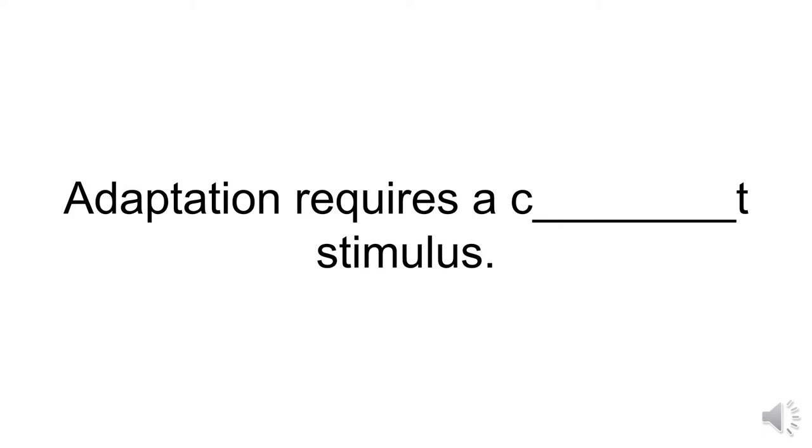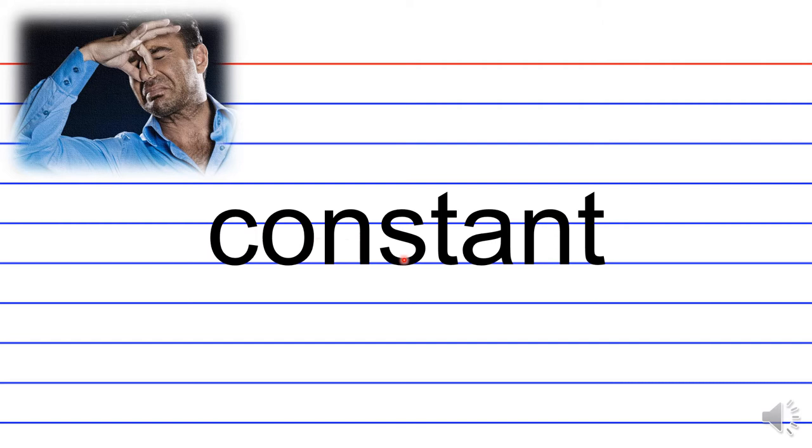Adaptation requires a c-blank t stimulus. So, in order to adapt to a stimulus, what is required? Again, that stimulus has to be constant. Like, you know when someone releases a really potent fart? And after like a few seconds, you get accustomed to the smell, almost as if it's not there. That's because there's a constant whiff of gas molecules interacting with your sense of smell.